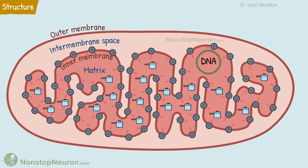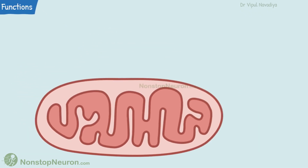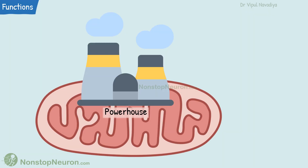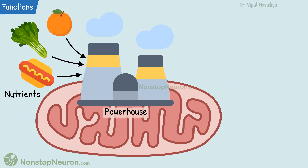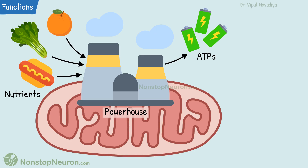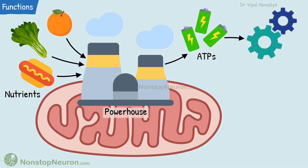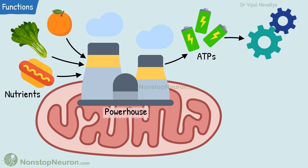So that was the structural part. Now let's see the functions of mitochondria. First and foremost, they are the powerhouses of the cell. They extract energy from different nutrients and convert it into a common energy currency, ATP. The ATPs are then used as an energy source for various reactions.